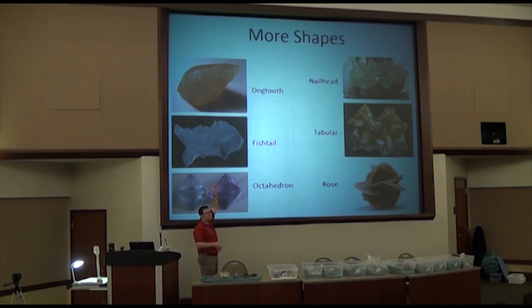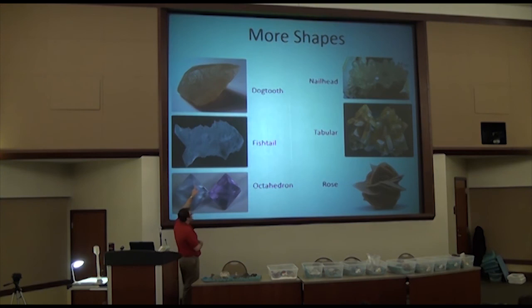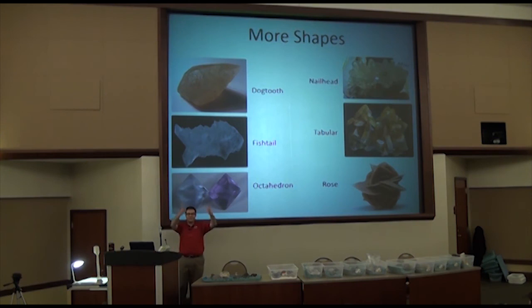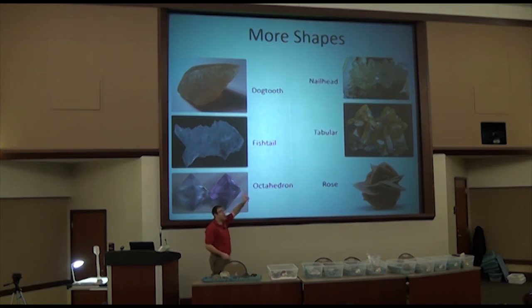The dog tooth shape pictured is actually calcite — calcite comes in many cool shapes, often including dog tooth. Another shape is nail head: it has three faces that meet to a point with relatively parallel sides below, shaped kind of like a nail. That piece is also calcite, another shape that calcite can form in.